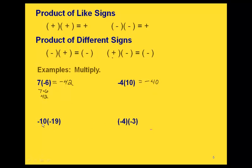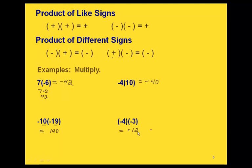In these two down here we have numbers with the same sign. We have negative 10 times negative 19: since they have the same sign we know the answer is going to be positive, so we just think about 10 times 19, which is 190. And for negative 4 times negative 3, since these have the same sign the answer is positive, and 4 times 3 is 12, so we get positive 12.